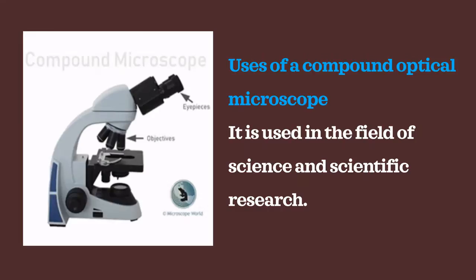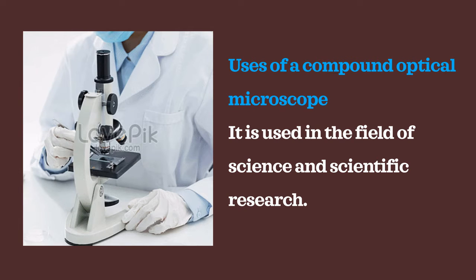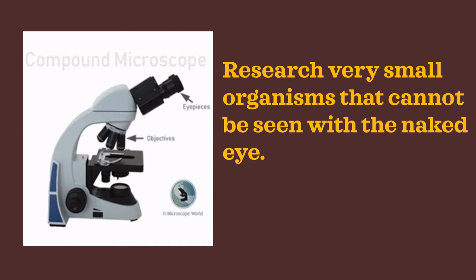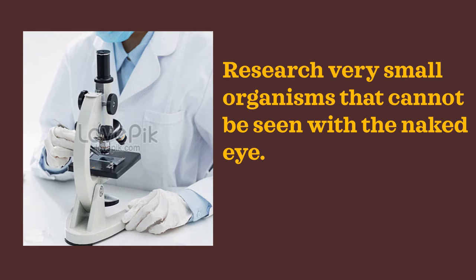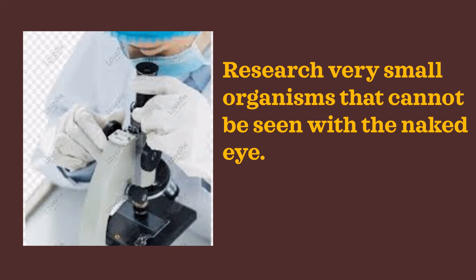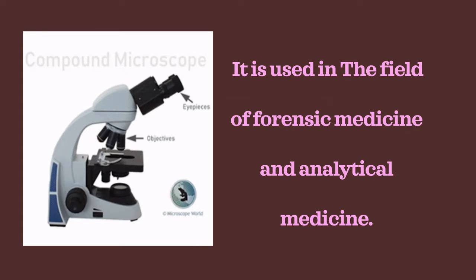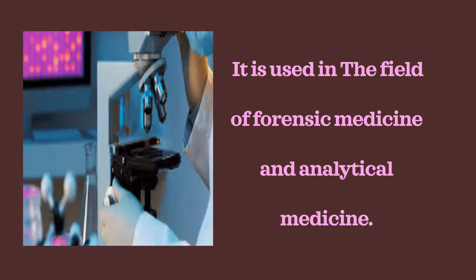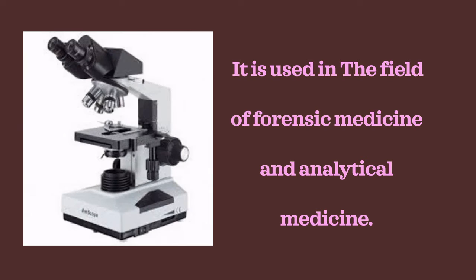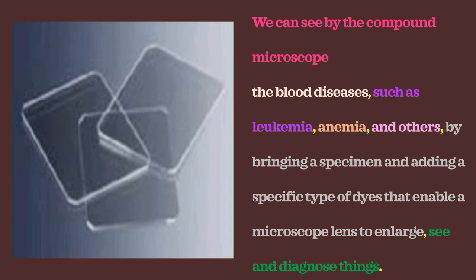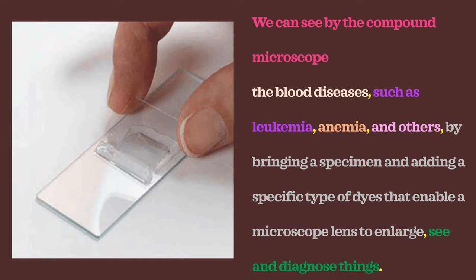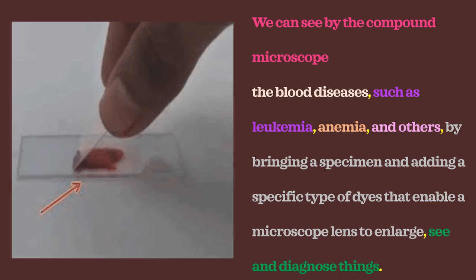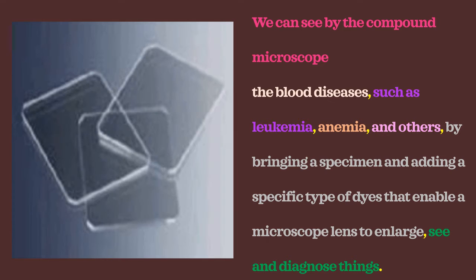The compound optical microscope is used in science and scientific research to study very small organisms that cannot be seen with the naked eye. It is used in forensic medicine and analytical medicine to examine blood diseases such as leukemia and anemia by preparing specimens with specific types of dyes that enable the microscope lens to enlarge and distinguish things.